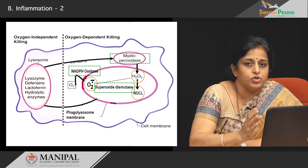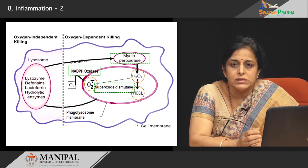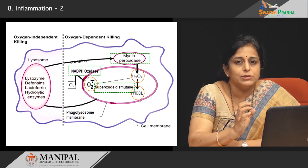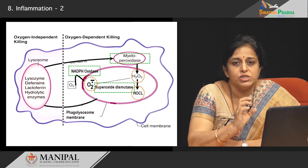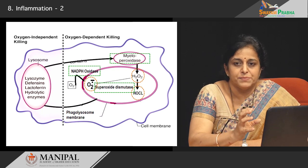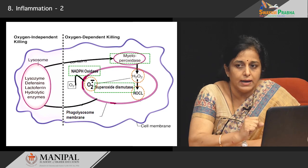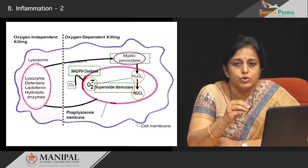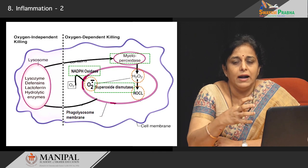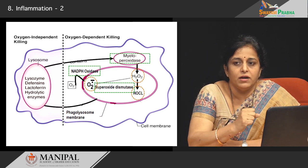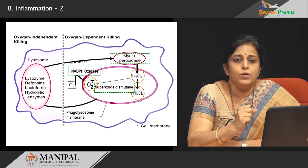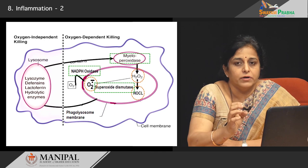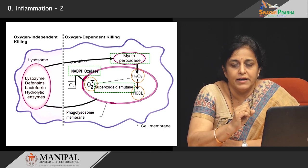There is oxygen-dependent killing and oxygen-independent killing. Oxygen-independent killing involves various toxic substances and enzymes present within the lysosomes, including lysozymes and defensins. Defensins form pores on the bacterial cell wall causing increased water entry and bacterial lysis. Lactoferrin is another toxic substance within the lysosome, along with various other hydrolytic enzymes. Oxygen-dependent killing is, however, a very, very powerful bactericidal mechanism.